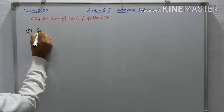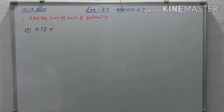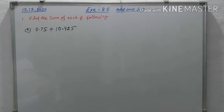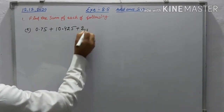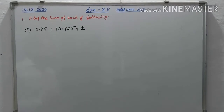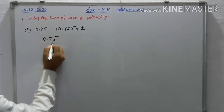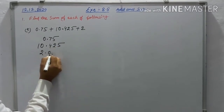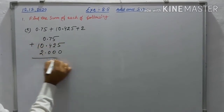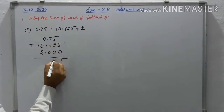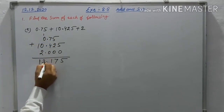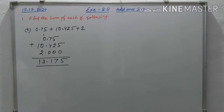Question (e) is 0.75 plus 10.425 plus 2. The 2 is a whole number — put the decimal point after it, so 2.000. Add 0.750, 10.425, and 2.000: 5, 5, and 2 is 7; 7, 4 is 11 — carry 1 — 2, 1, carry — the answer is 13.175.